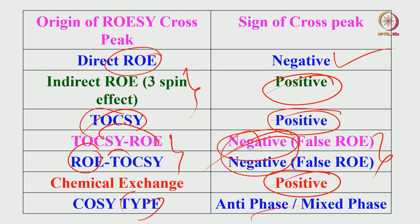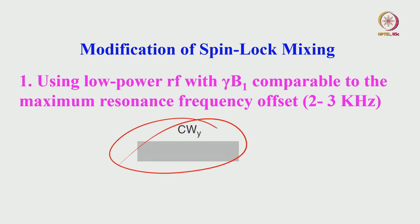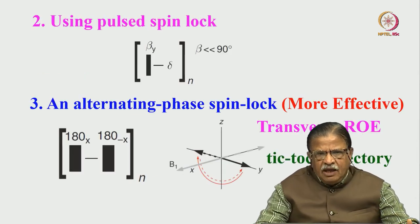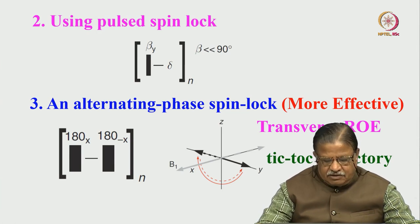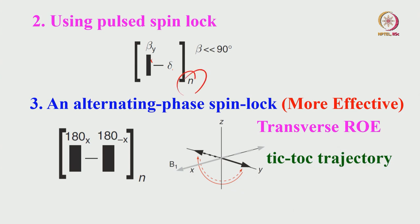To overcome these problems, firstly you can apply very low power RF for spin locking — very low power comparable to the maximum resonance frequency offset — you do not need to use higher power. Alternatively, you can use a pulsed spin lock instead of a continuous wave (CW). You apply pulses with a delay — the pulse angle can be less than 90 degrees — and repeat n number of times for the entire mixing time period. That is a spin lock done in a pulsed manner rather than CW, which can also help.